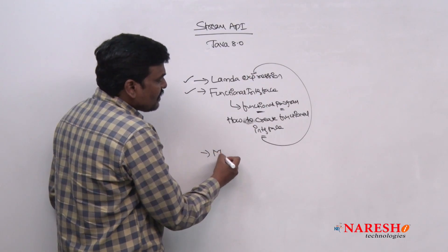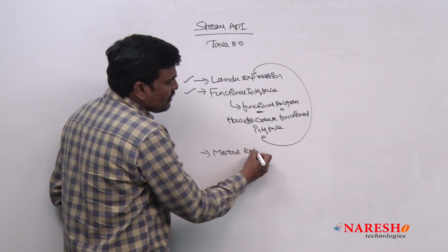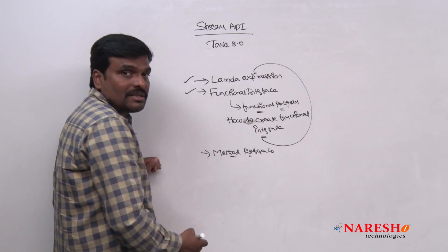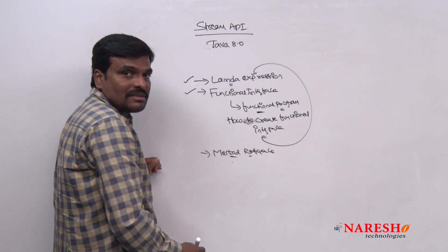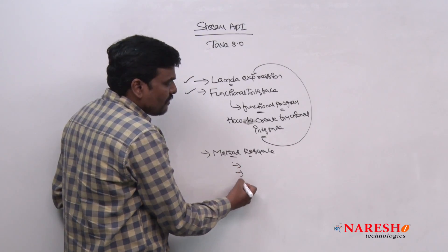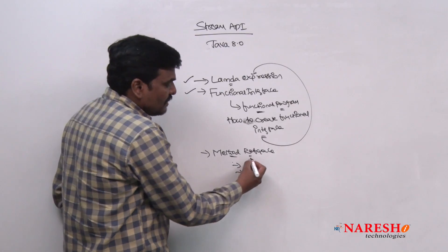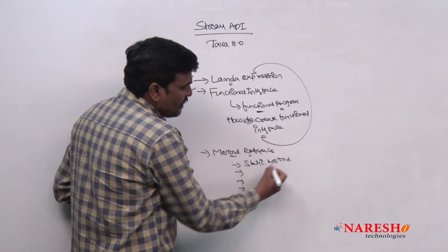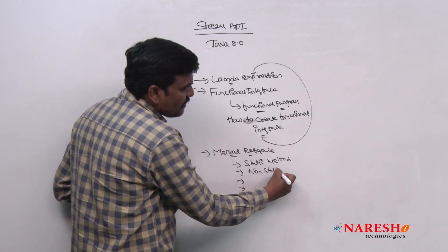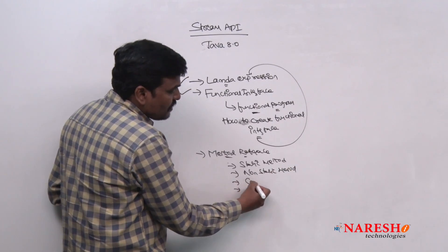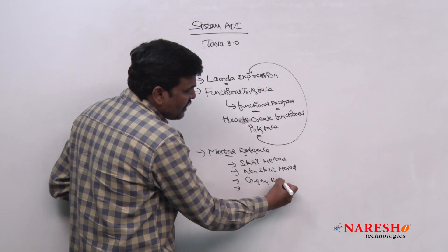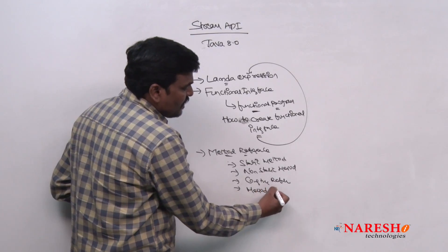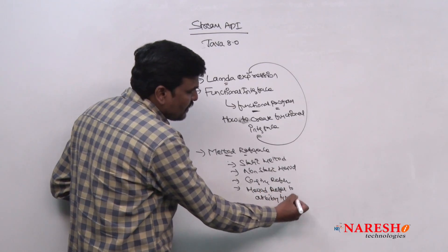We have also seen one of the changes in Java 8, that is method reference. Method reference is nothing but a shorthand for a lambda expression. We have seen different types of method references in the previous videos: static method reference, non-static method reference, and even constructor reference, as well as a method referring to an arbitrary type.